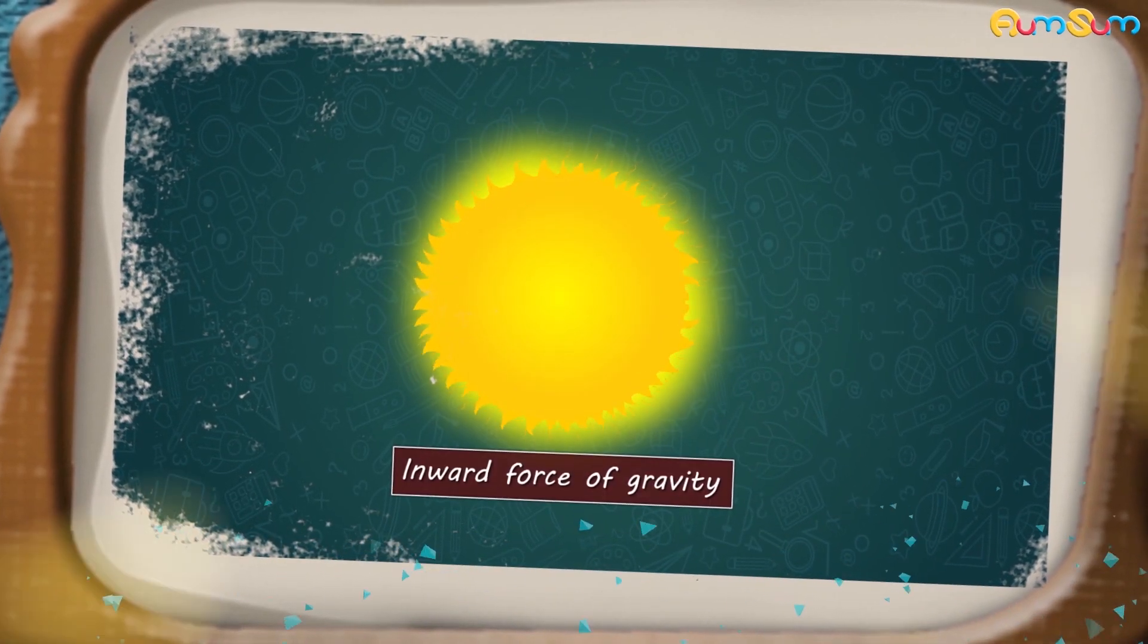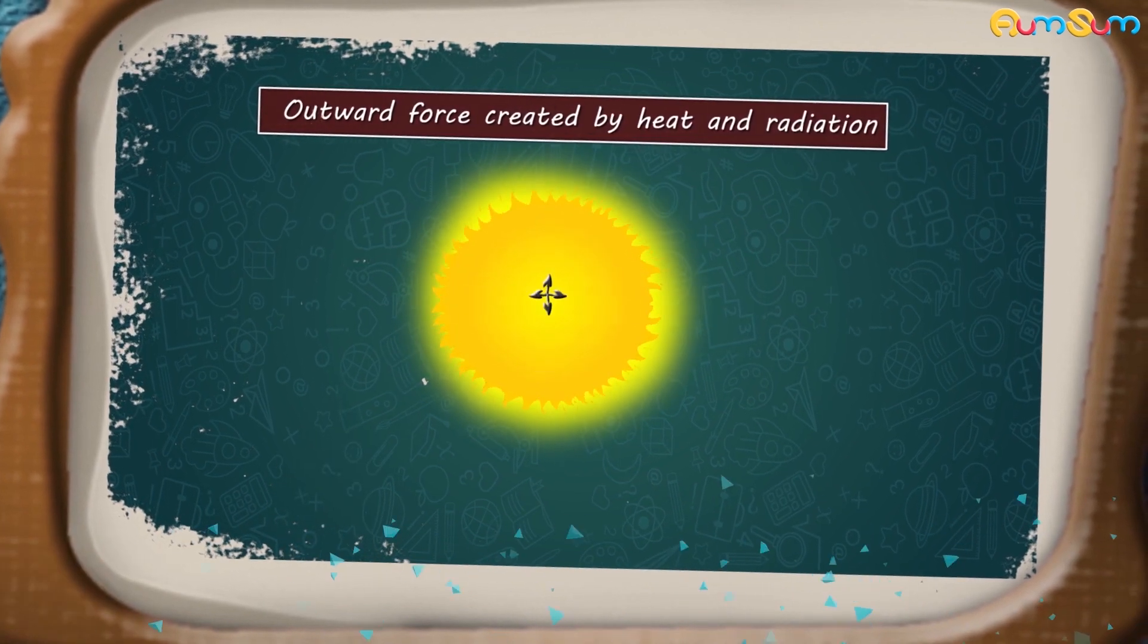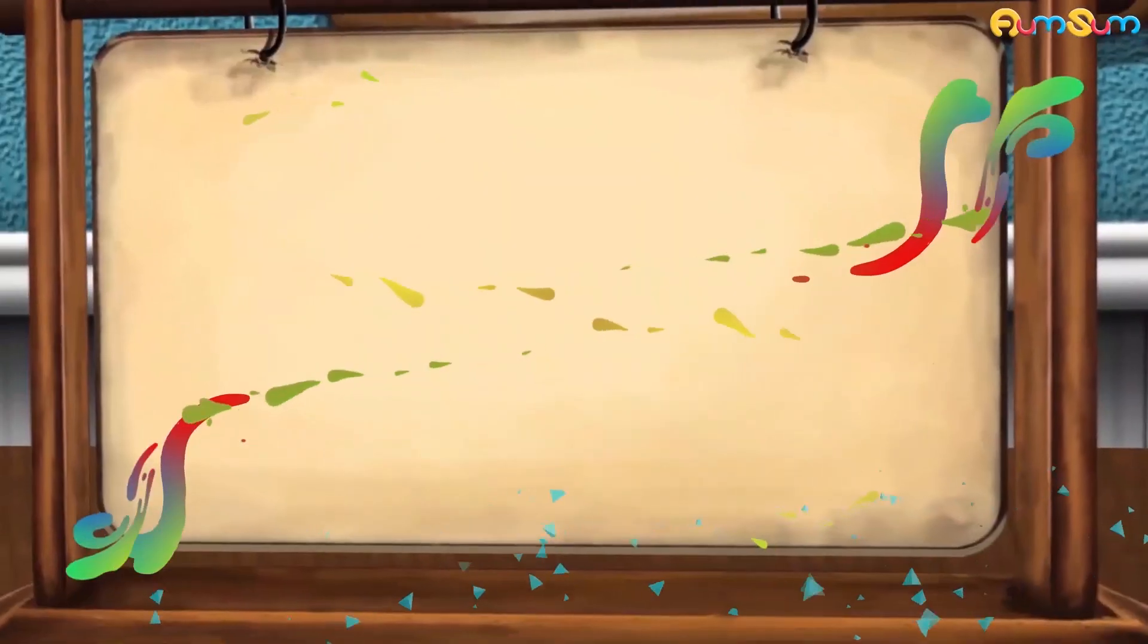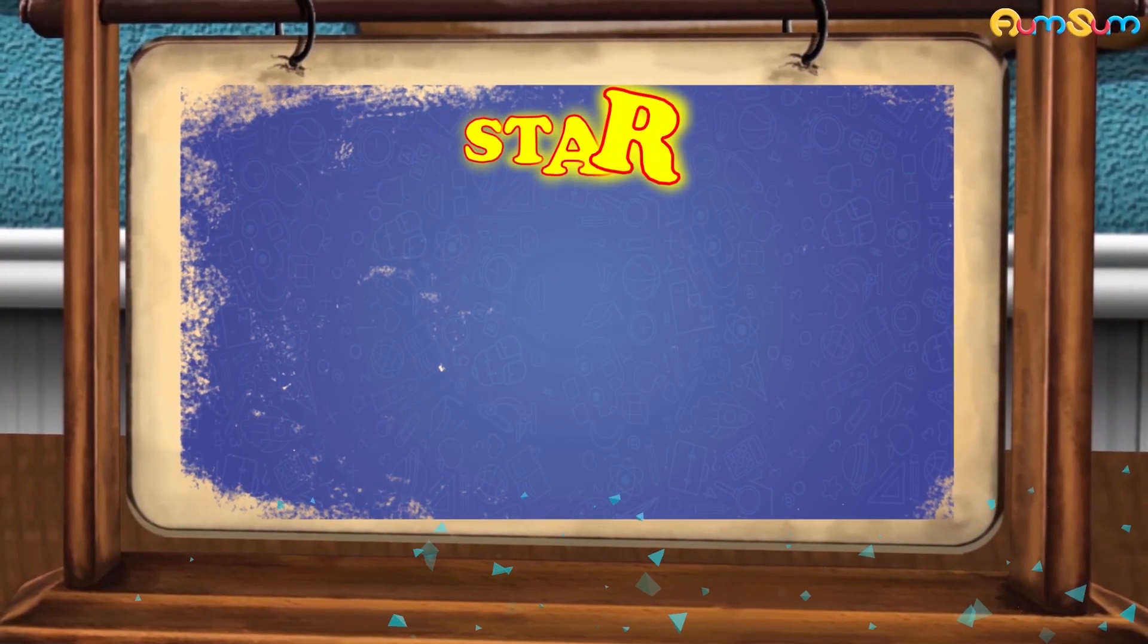When this happens, the inward force of gravity is exactly balanced by the outward force created by heat and radiation. These inward and outward forces maintain balance and thus, a star is born.